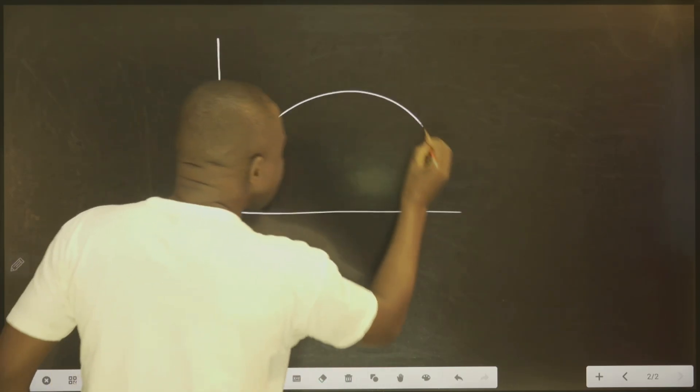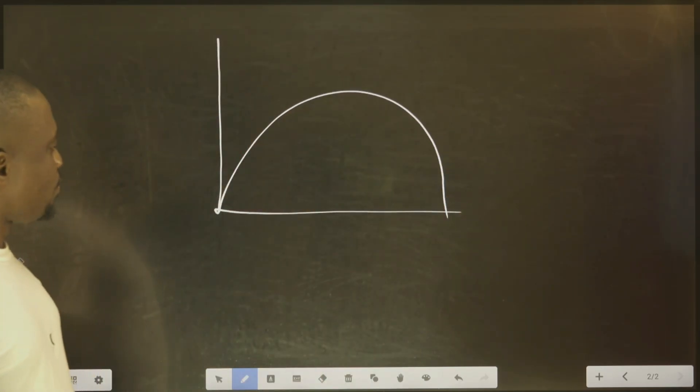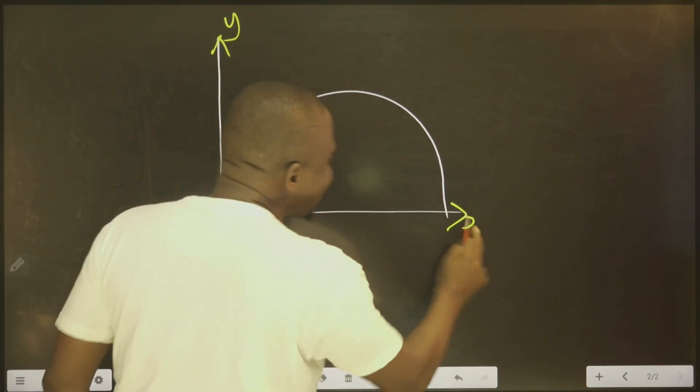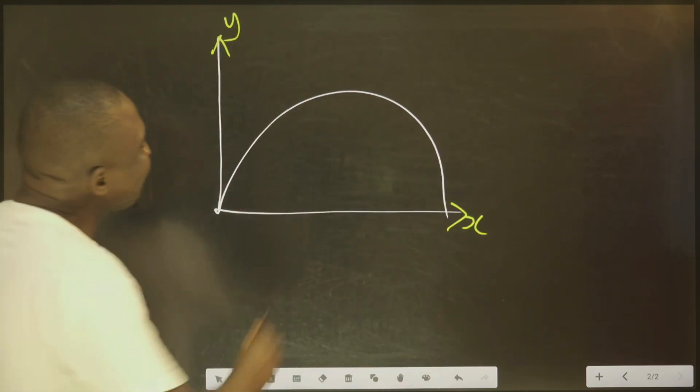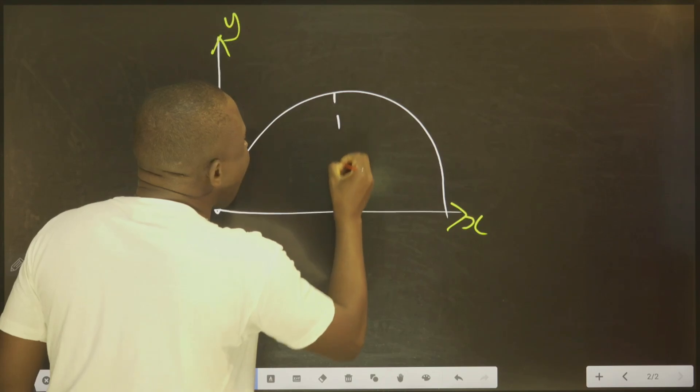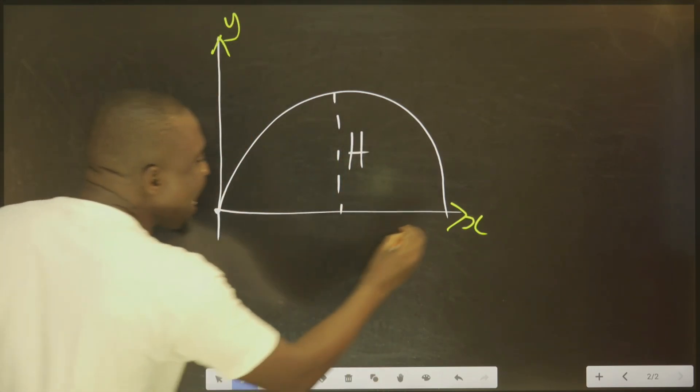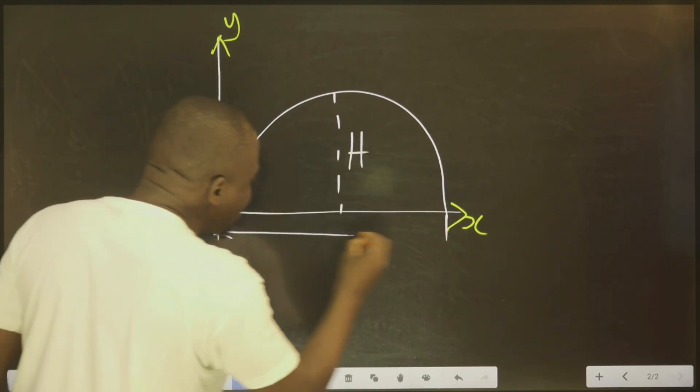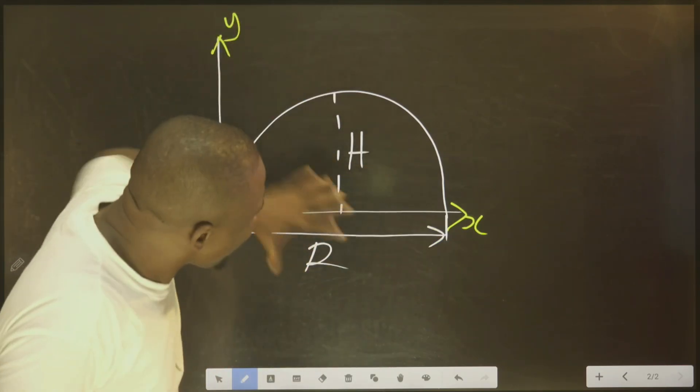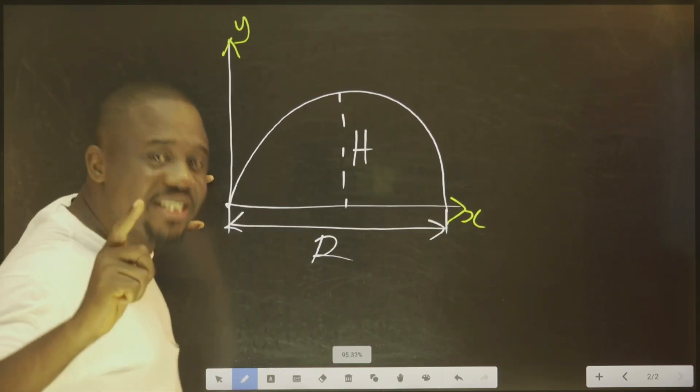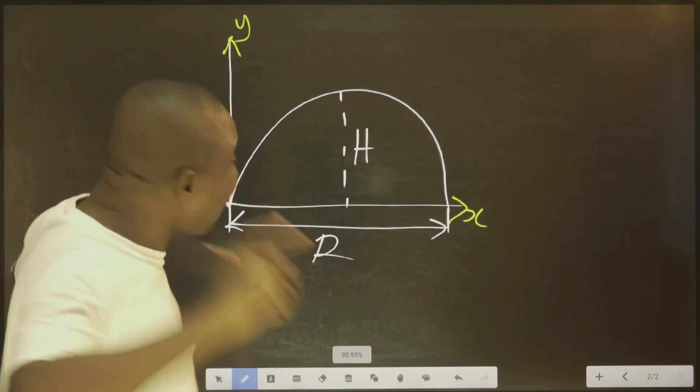You agree with me that this is a projectile. This is Y axis, and this is X axis. This is called the maximum height H. Here to here is called the range. What are the formulas? If you can remember this picture, the first thing you should tell yourself is you need to deal with time first.